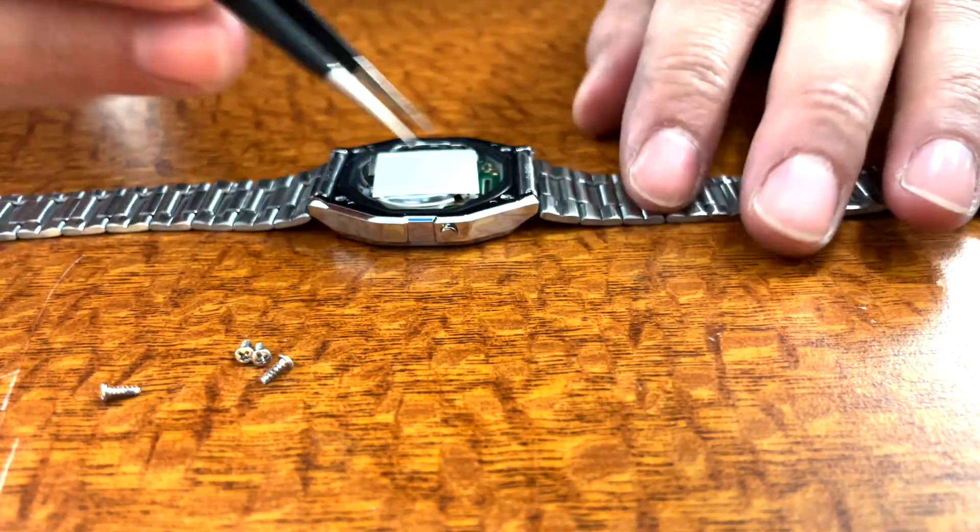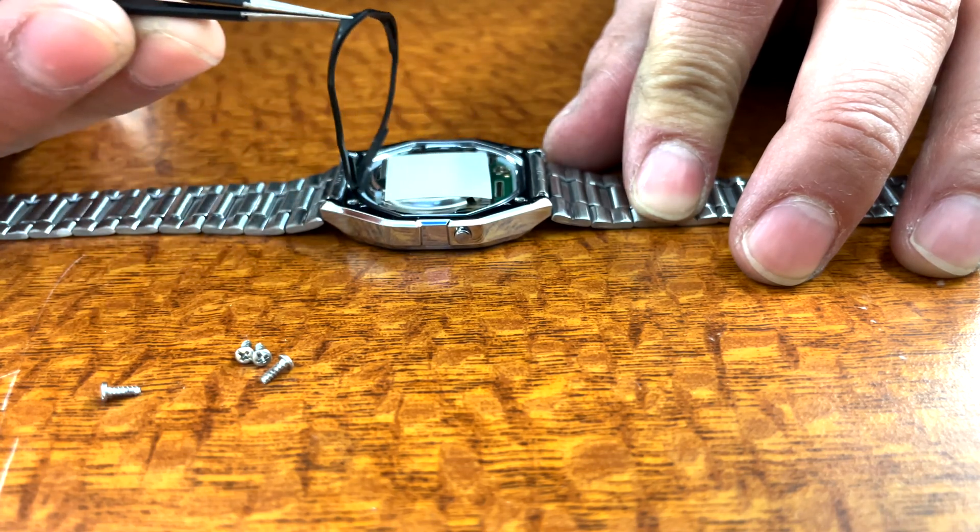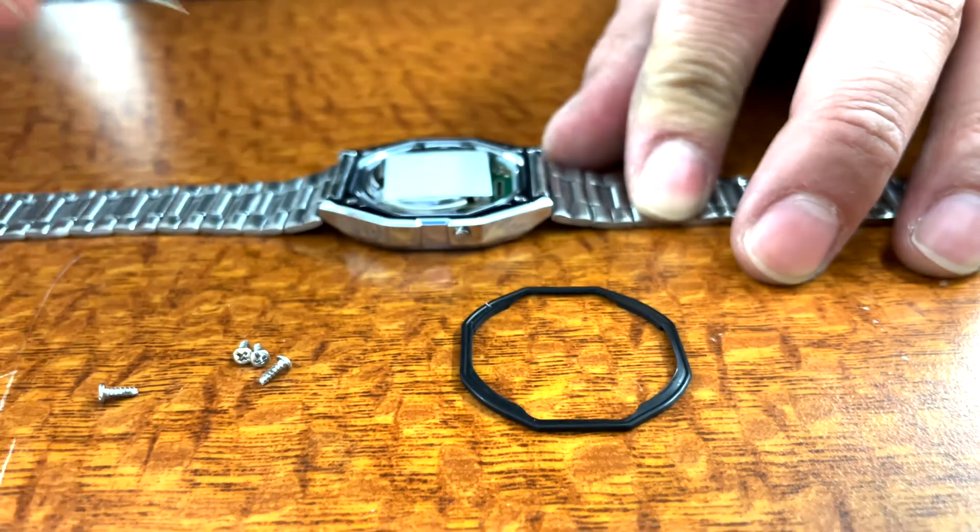Using either your fingers or the tweezers, carefully remove the rubber gasket from the watch case and set it aside, taking care to note the orientation.